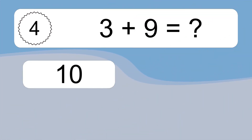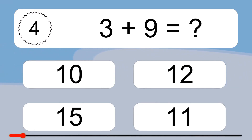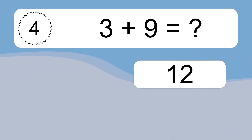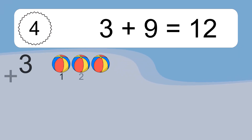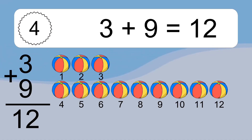3 plus 9 equals what? 3 plus 9 equals 12. Let's count it: 1, 2, 3, 4, 5, 6, 7, 8, 9, 10, 11, 12.